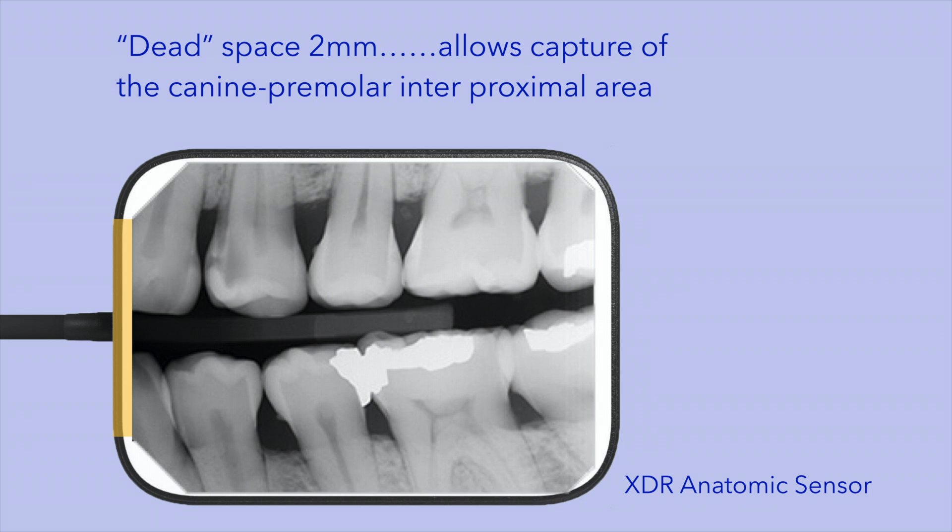With the XDR sensor, the dead space at the corded end of the sensor is approximately 2 mm. This allows us to better capture the area of the canine premolar interproximal region, which is a critical region that we capture on bite-wing radiographs.